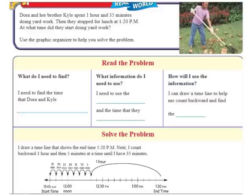So we're going to just go through the Unlock the Problem on page 479. We're also going to do page 480, so if you're in my class, you should have your big book, pages 479 and 480, as you're following along. All right, so the problem says Dora and her brother Kyle spent 1 hour and 35 minutes doing yard work. That's how long they were out there. Then they stopped for lunch at 1:20 PM. At what time did they start doing yard work?